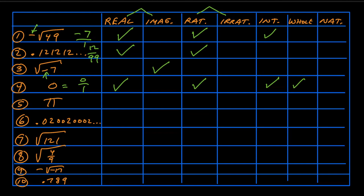For number five, pi — you know about pi from geometry and circles. Pi is approximately 3.14159... and it keeps going. It doesn't terminate or stop, but it also doesn't repeat. So it's going to be an irrational number, not rational — it can't be written as a ratio. Sometimes people approximate pi with 22/7, but that's not exactly pi, so pi is irrational. It's real — not the square root of a negative number, so not imaginary. But it's not an integer, not whole, and not natural. Just two categories: real and irrational.